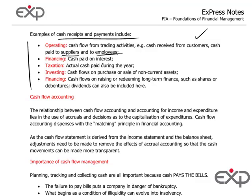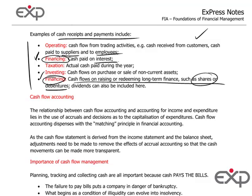There's cash that has to be paid on interest payments for loans. We also have financing cash flows connected with raising long-term finance for the business, which can take the form of issuing shares or bonds — debentures being a type of bond — in order to raise cash for the business for investment purposes.